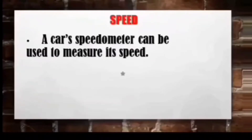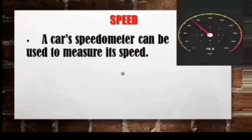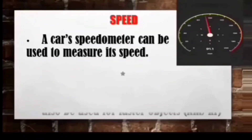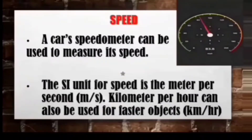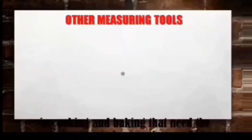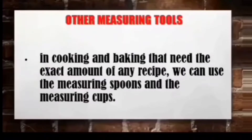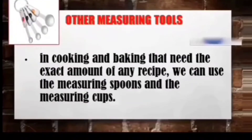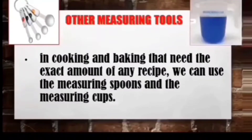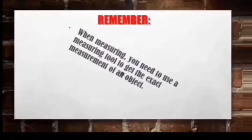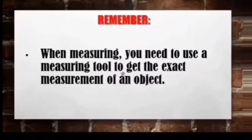Number seven: speed. A car's speedometer can be used to measure its speed. The standard unit for speed is meters per second; however, kilometers per hour can also be used for faster objects. Number eight: other measuring tools. In cooking and baking that require the exact amount of ingredients, we can use measuring spoons and measuring cups. Remember, when measuring, you need to use the correct measuring tools to get the exact measurement of an object.